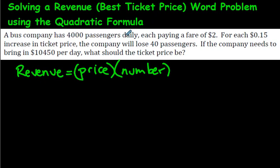It's a bus company. There are 4,000 passengers every day, and each passenger pays a fare of $2. The company notices that each time they raise the price by $0.15, they lose 40 passengers — people say that's just too much and they'll ride their bicycle or take their car instead. But the company needs to bring in $10,450 per day. What should the ticket price be?